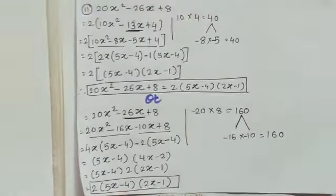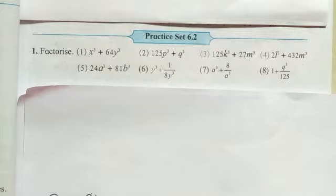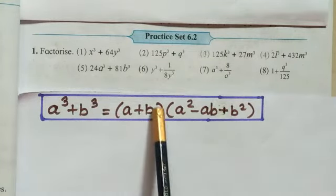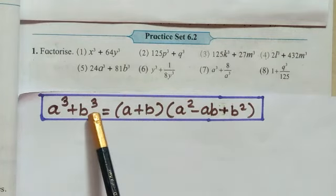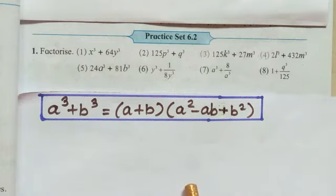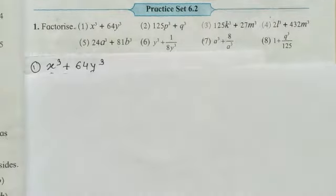Now let's go ahead with Practice Set 6.2. Since the last two units, we have been aware of different formulas. The base of this practice set is one most important formula: a³ + b³ = (a + b)(a² − ab + b²). In the second bracket: first term squared, minus multiplication of both terms, plus second term squared. Let's solve some examples using this formula for factorizing the addition of two cubes.